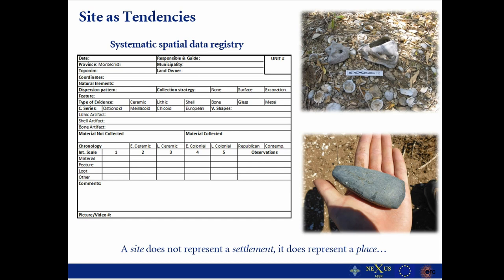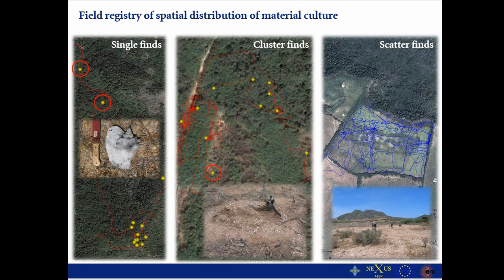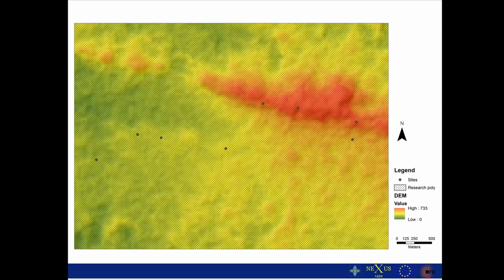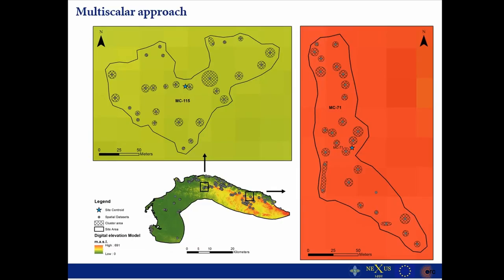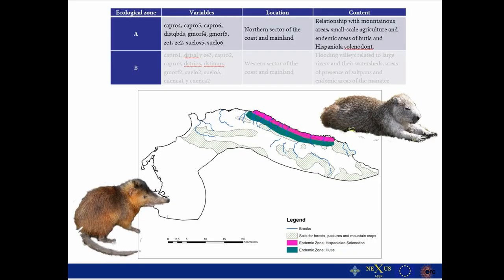I created a definition of sites as tendencies, where when recording evidence in the field I divide it into single clusters and scatter finds, in order to move from the general or traditional representation of archaeological sites in the terrain to something more dynamic that could provide more information on the different layers of human actions in the terrain, and also to allow me to move from a multi-scalar approach to particular elements on the terrain to a regional definition.